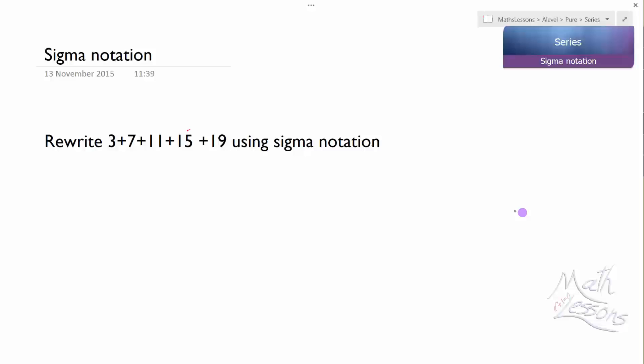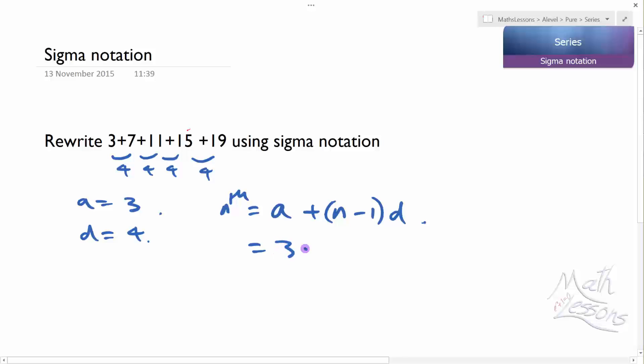So what we can do is we can see that it goes up by 4 each time. So we have an arithmetic series where A, the first term, equals 3, and D, the common difference, equals 4. So the formula that we know for the nth term is equal to A plus (n minus 1)D. So we get 3 plus (n minus 1) times 4. And we can simplify that out to get 4n plus 3 minus 4, which equals 4n minus 1.